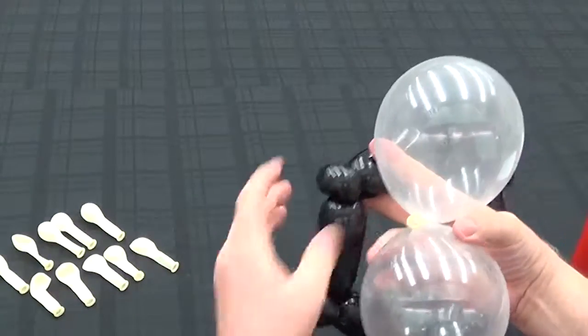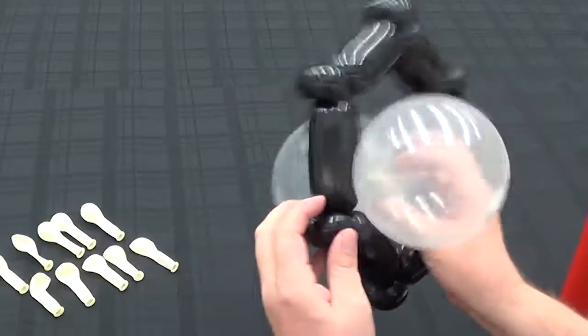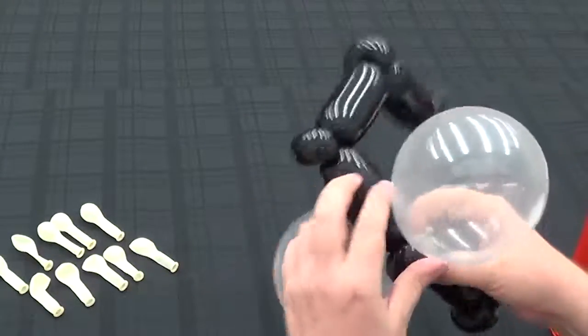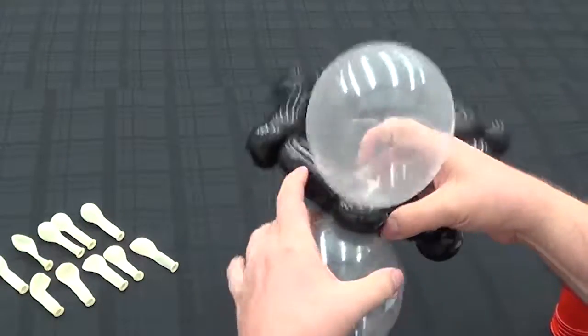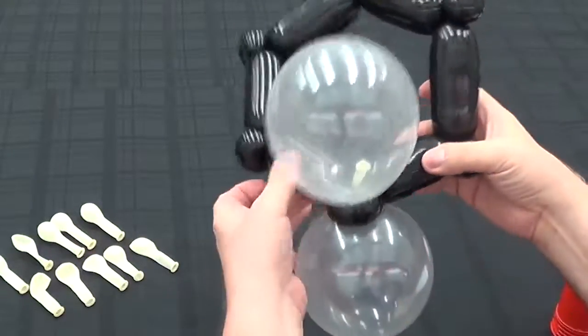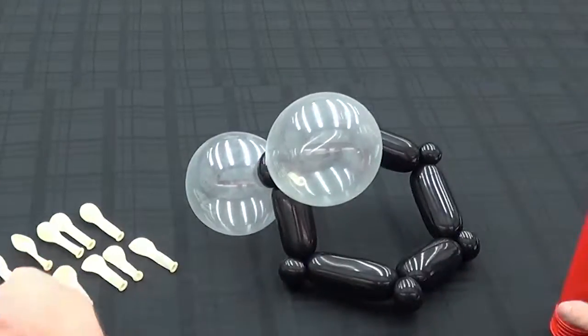We start slipping those into the joints where there's the pinch twist followed by the two 4-inch bubbles. And as you slip that in, you twist the pinch twist horizontal. Notice that fairly stabilizes it and locks it right in place. And we just keep doing that all the way around the ring.